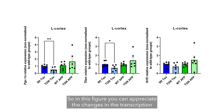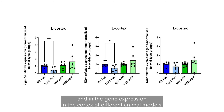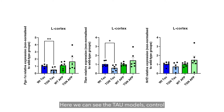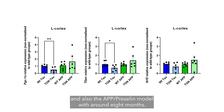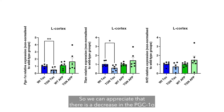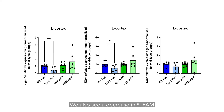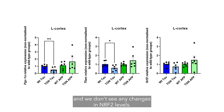In this figure, you can appreciate changes in transcription and gene expression in the cortex of different animal models — the tau model at around 5.6 months and the APP/presenilin model at around eight months. We can see a decrease in PGC1-alpha expression in the tau model compared to its respective control, as well as a decrease in NRF1, with no changes observed in NRF2 levels.